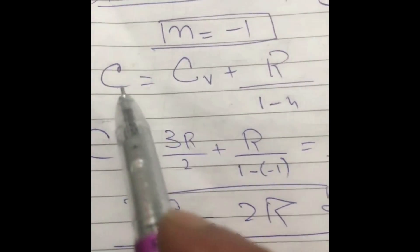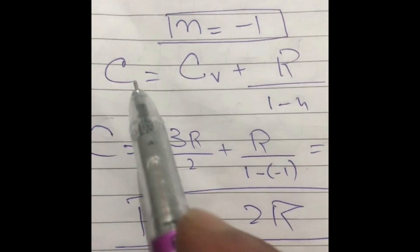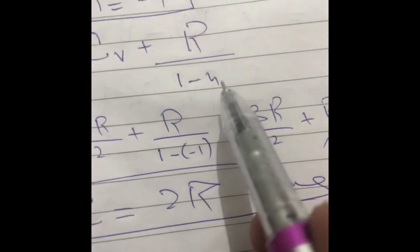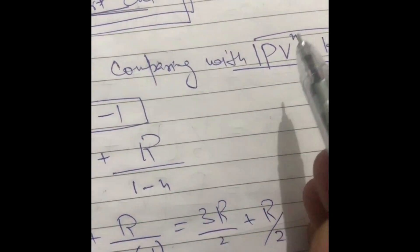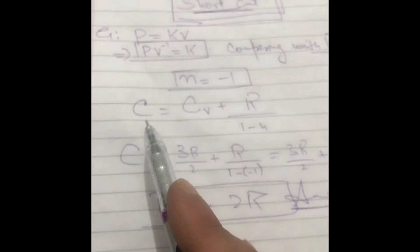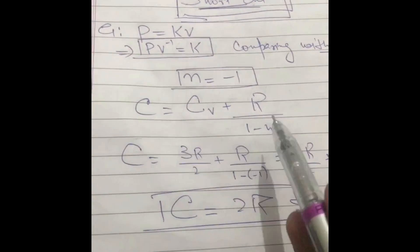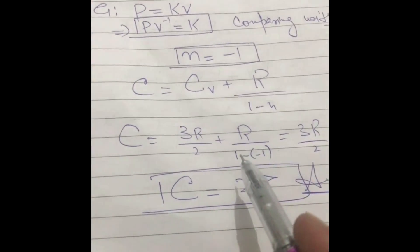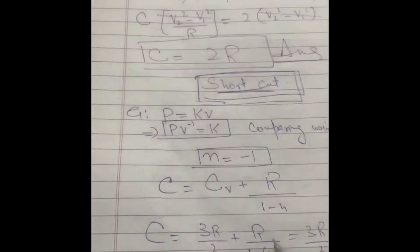The specific heat for any polytropic process — whether isochoric, isobaric, adiabatic, isothermal, or any other — can be written as: C = Cv + R/(1 − n), where n is the power of volume. We have already found n = −1. So C = Cv + R/(1 − (−1)) = Cv + R/2. For a monoatomic gas, Cv = 3R/2. Therefore C = 3R/2 + R/2 = 2R. This is just a three-step process — the same answer in three steps!